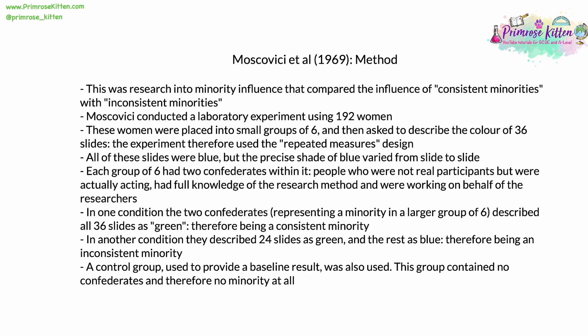This experiment used the repeated measures design, where the same thing is done again and again with many different groups. All of the slides were blue, but the precise shade of blue varied from slide to slide. Each group of six had two confederates within it — confederates are people who are not real participants but are acting as if they are, with full knowledge of the research method, working on behalf of the researchers.